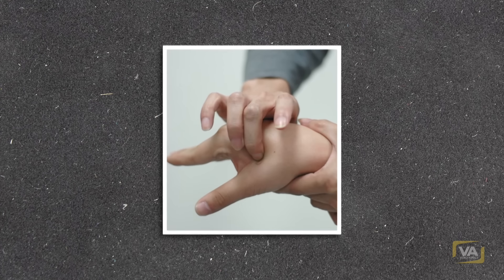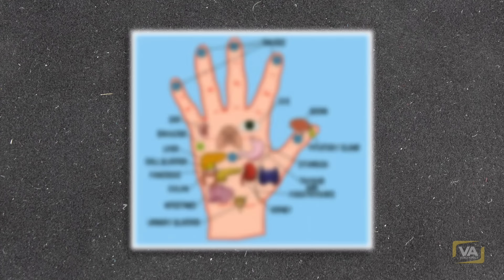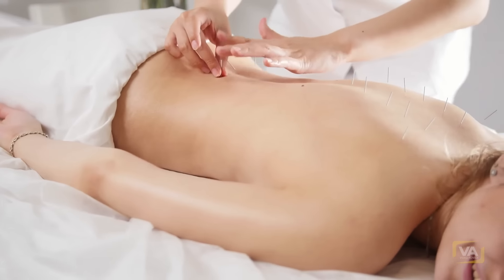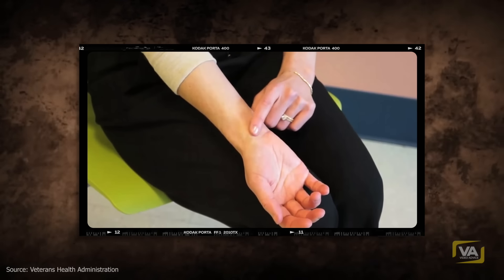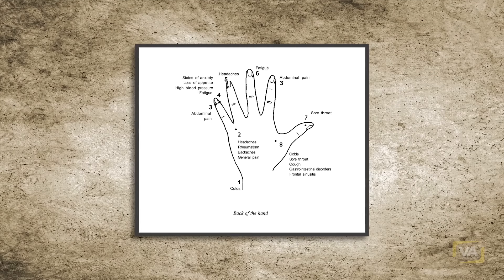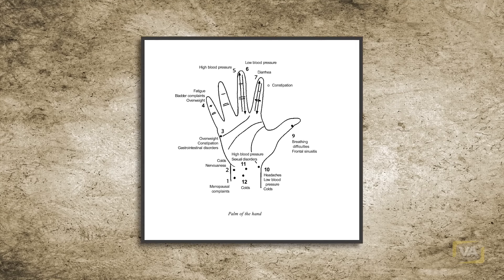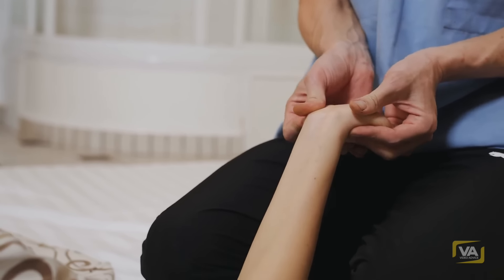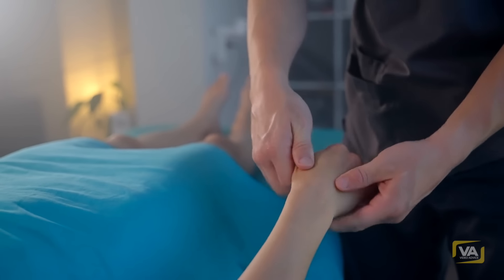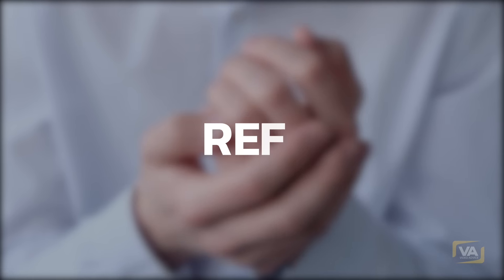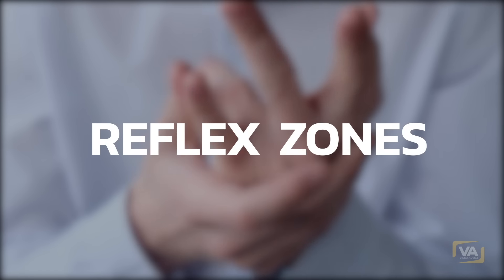Acupressure: Next to acupuncture, acupressure is the best-known Chinese healing method in Western countries. Instead of using needles, the meridians are stimulated with the fingers. In these two illustrations, you can see the corresponding points. The non-expert can simply press them lightly with the thumb for several minutes to achieve a positive effect.